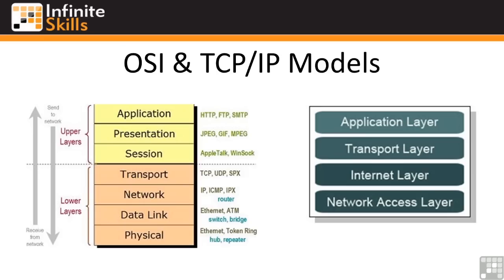In the OSI model we've got the physical layer at the bottom, then the data link layer above that, followed by the network layer, transport, session, presentation, and application. To the right of the layer names you'll see examples for each layer. At the physical layer, examples would be Ethernet or Token Ring, as well as a hub, a repeater, or a network interface card. At the data link layer, we're talking about another component of Ethernet, ATM, and switches and bridges, which operate at layer two.